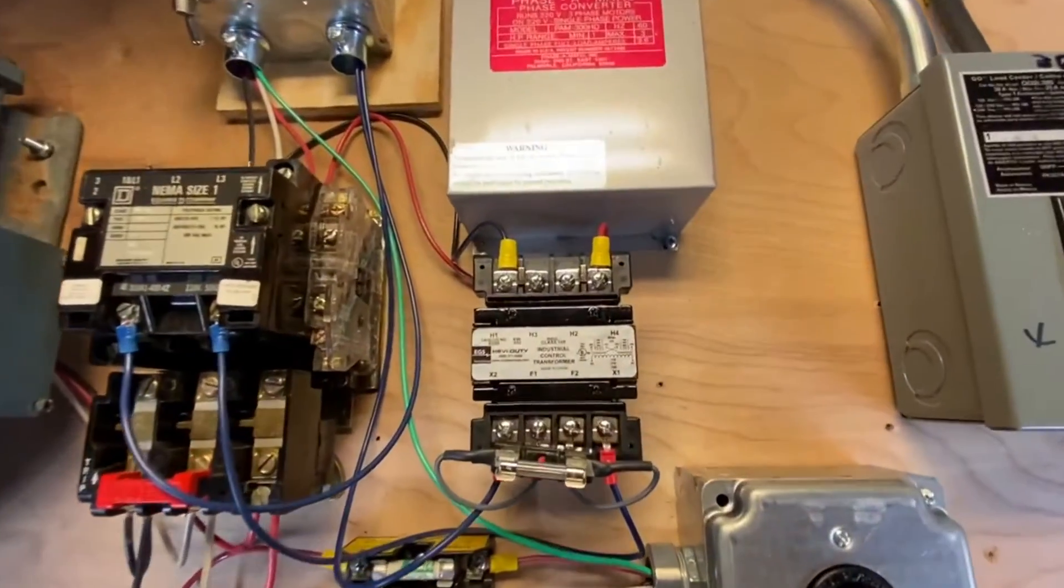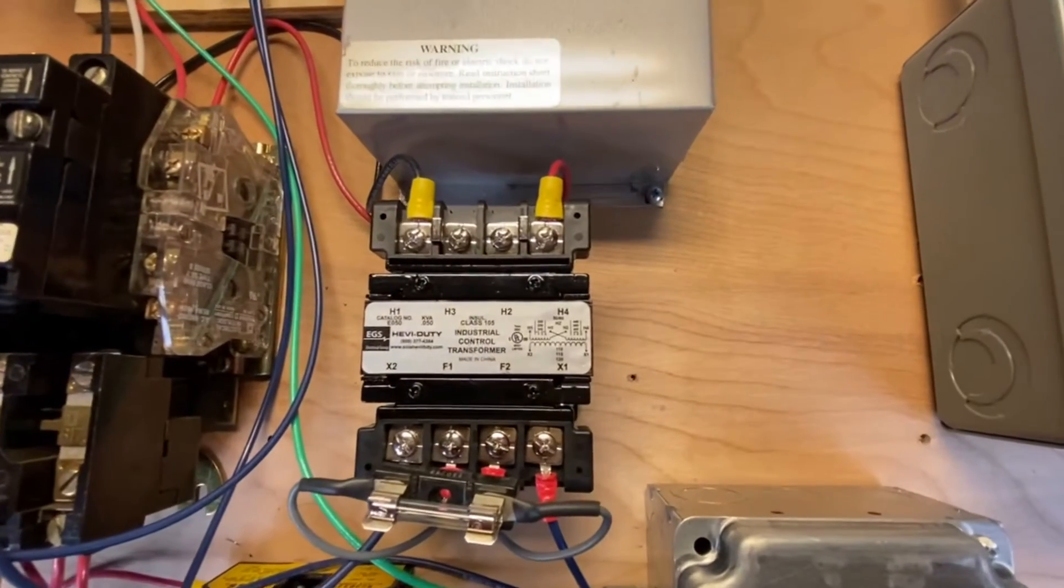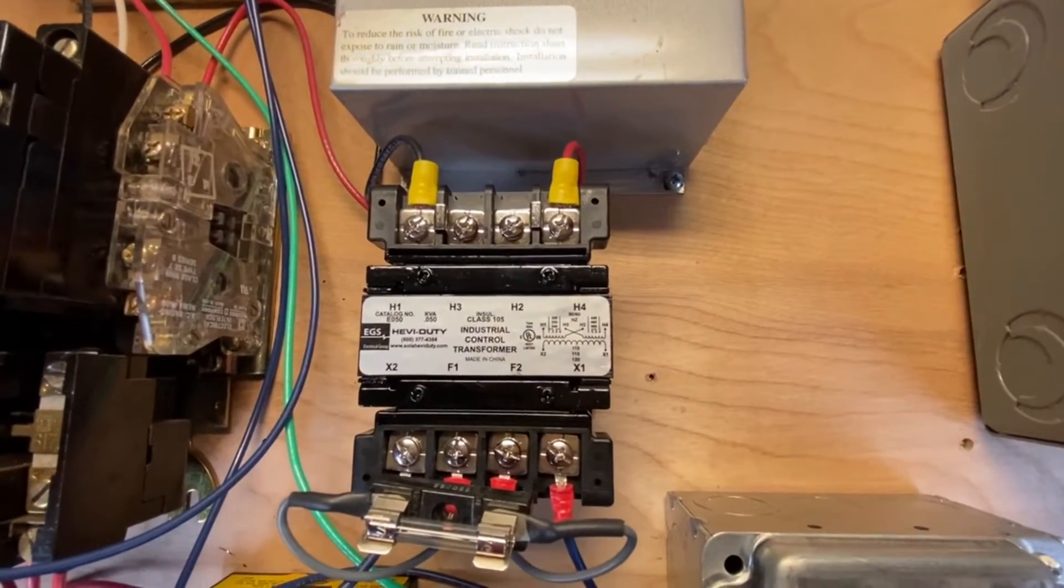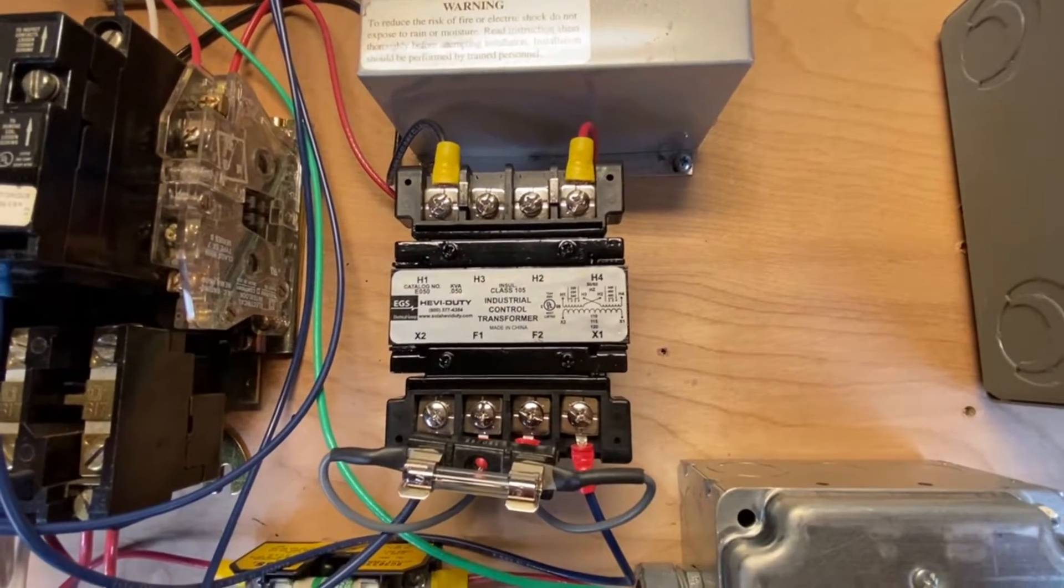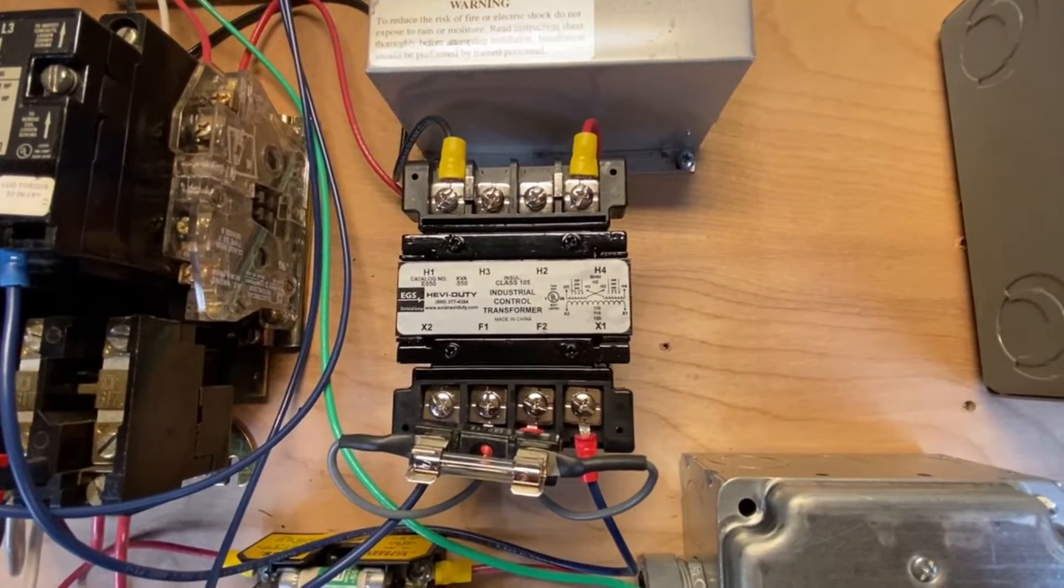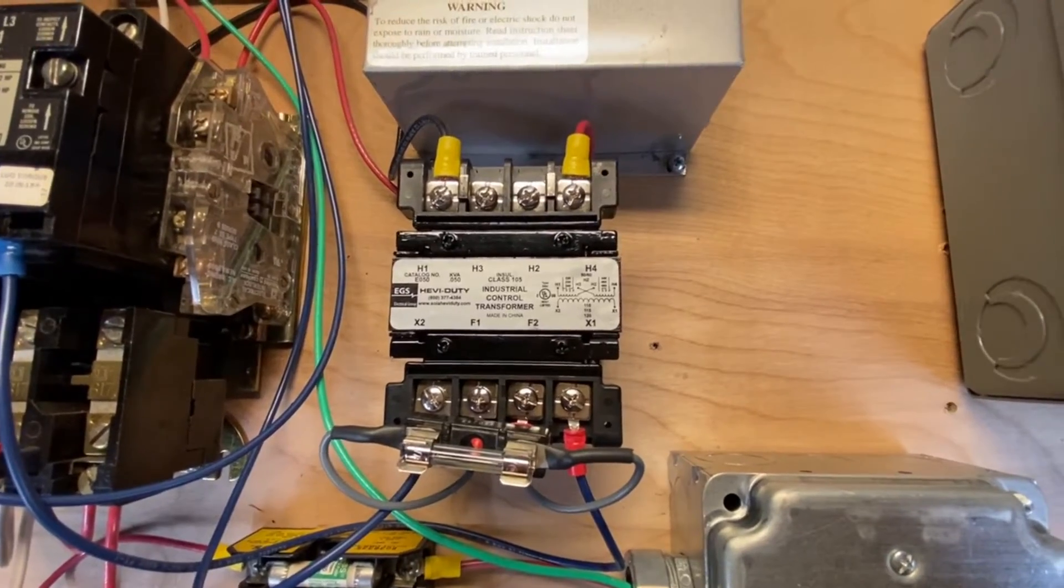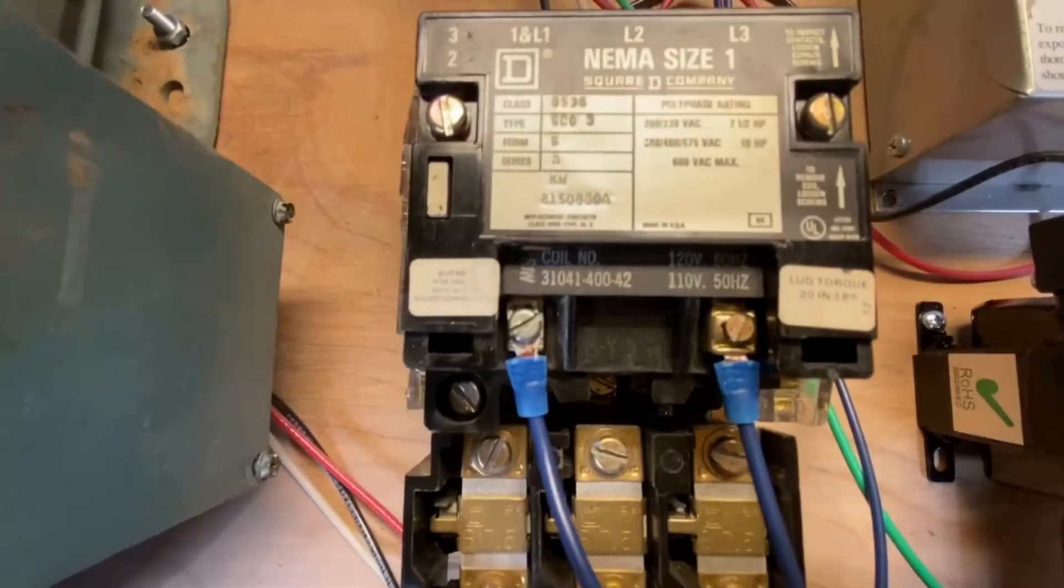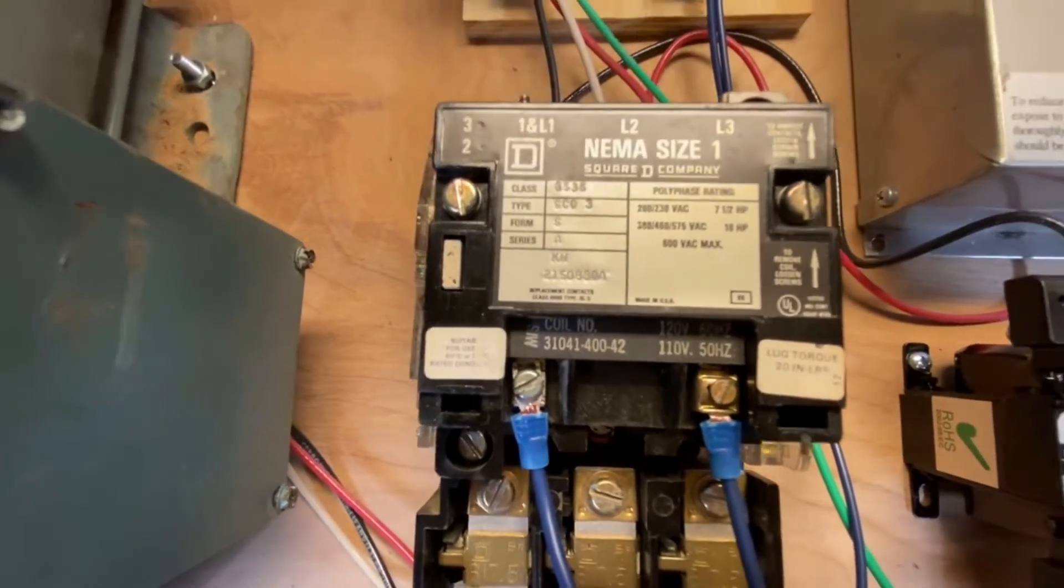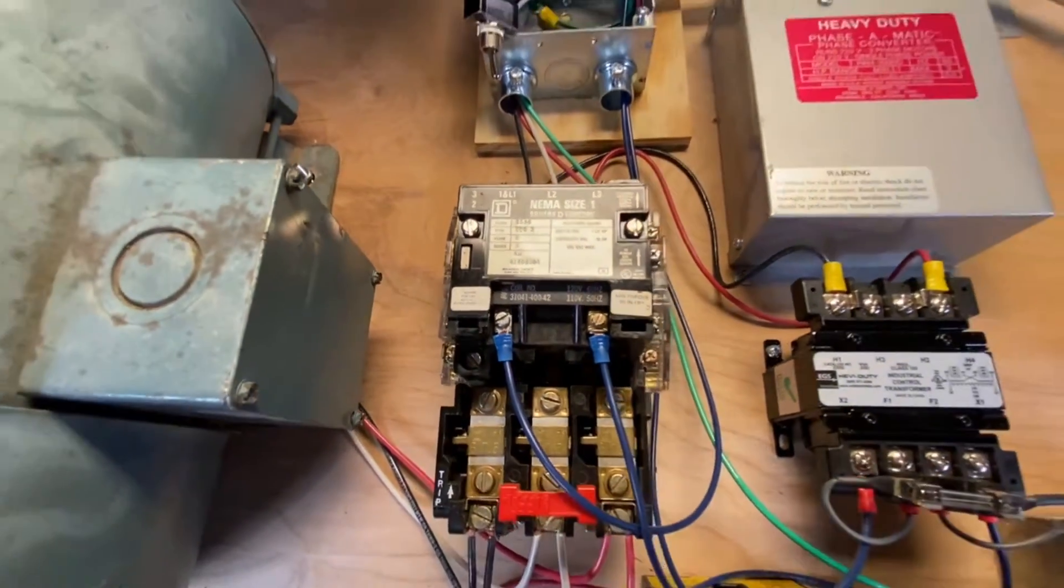Finally, the little device in the middle is just a transformer. It takes 220 volts in on the top and produces 120 volts at the bottom. The reason I needed that is I only brought two wires in, so just 220 volts, and I needed 120 or 110 for the coil of the contactor.